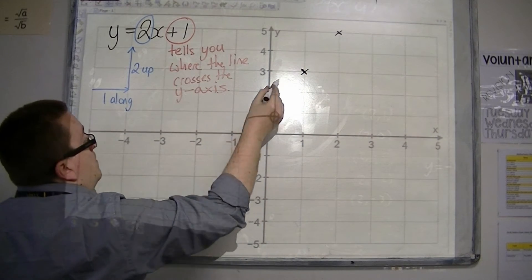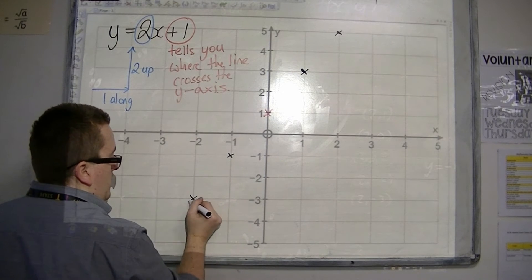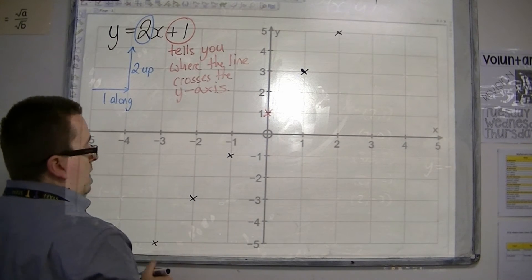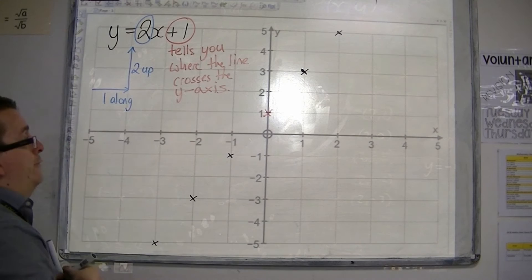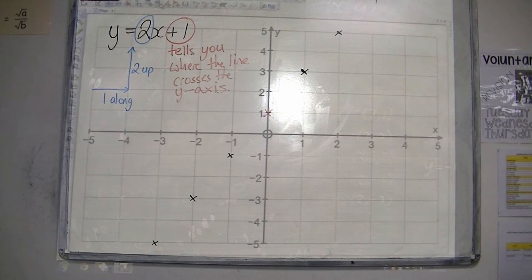And then you can backtrack it. So you're going 1 along 2 down, 1 along 2 down, 1 along 2 down, and you fill up the whole graph. So let's see what this looks like. Let's plot it. y equals 2x plus 1. There it is.